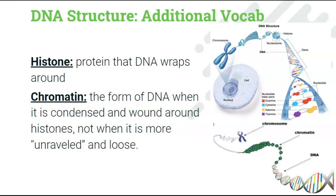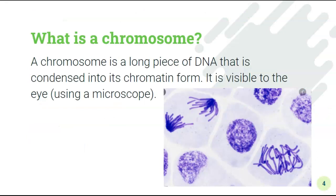When DNA coils up, it has a little organization to it. Think about yarn in a store — it's wrapped up into a ball to keep it from getting tangled. Same thing with your DNA. Your DNA wraps around these little protein balls called histones to keep it organized. Then those histones wrap and coil up further, and that is called chromatin. A chromosome is a long piece of DNA that's been wrapped around histones and coiled up super tight into chromatin form.